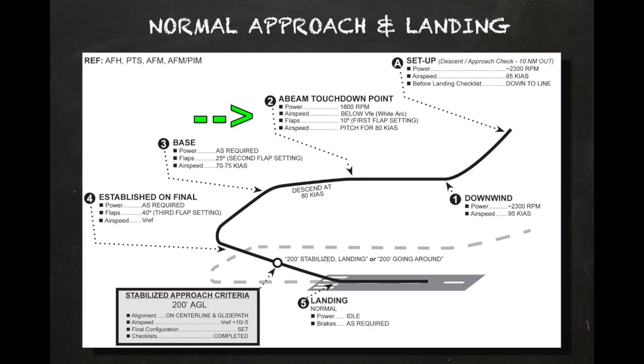As the airspeed slows to 80 knots, establish a descent to maintain 80 knots and continue along the downwind to a point that is 45 degrees from the landing threshold.